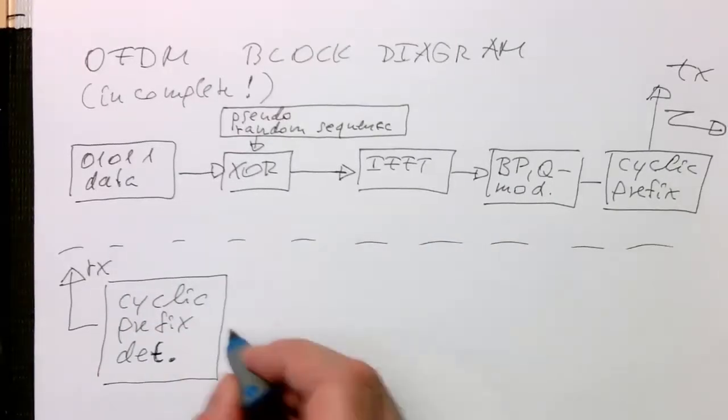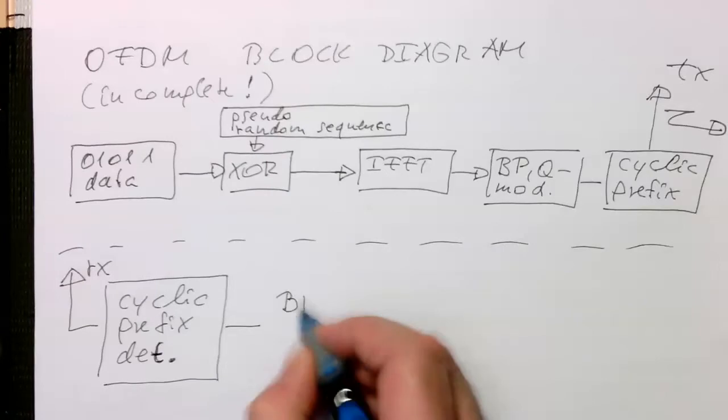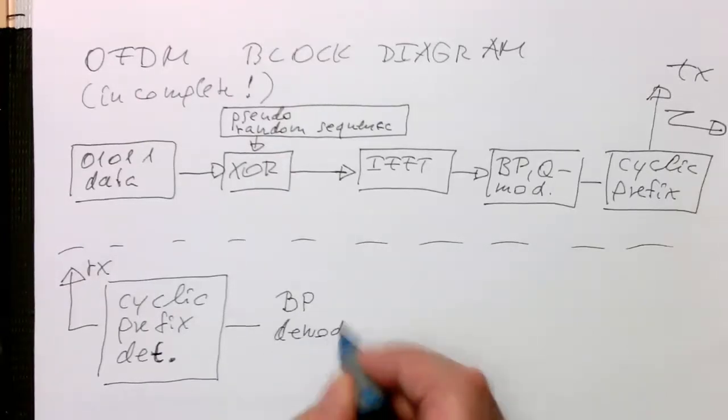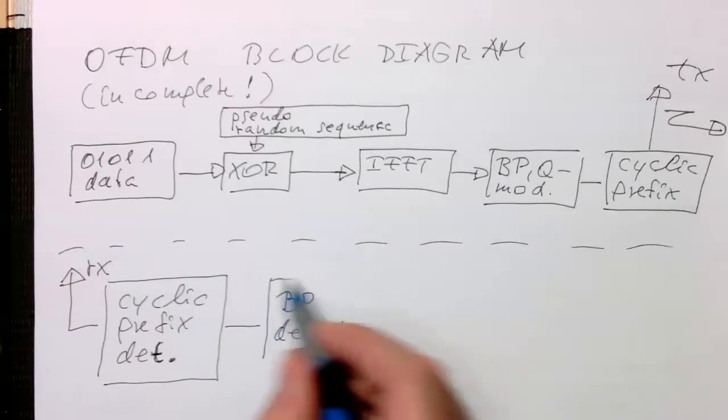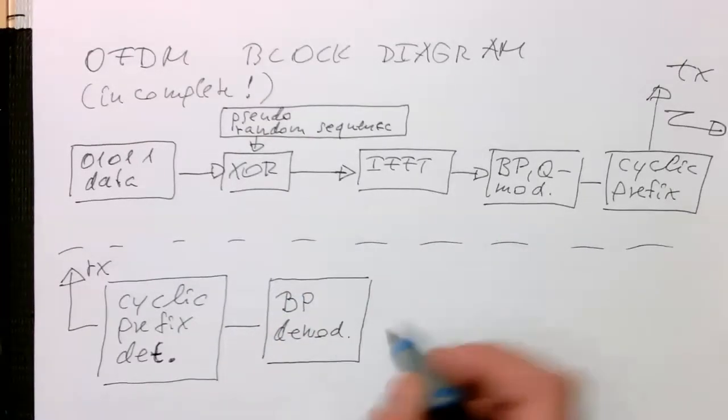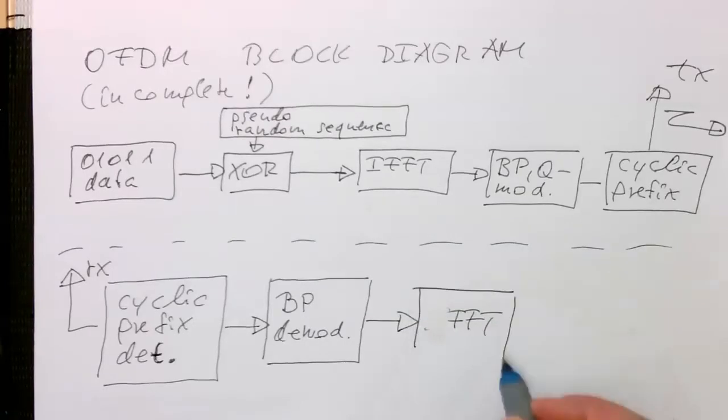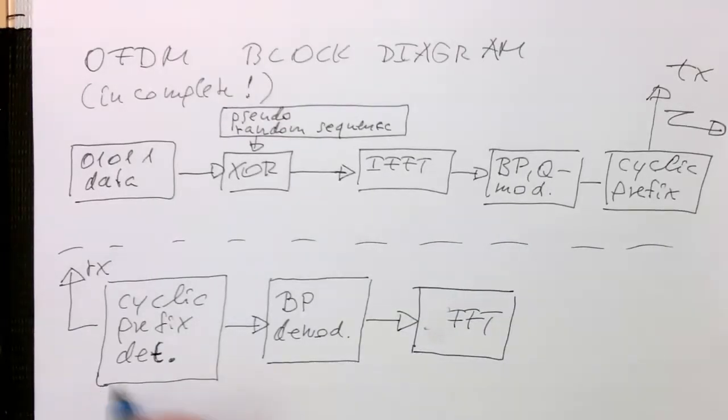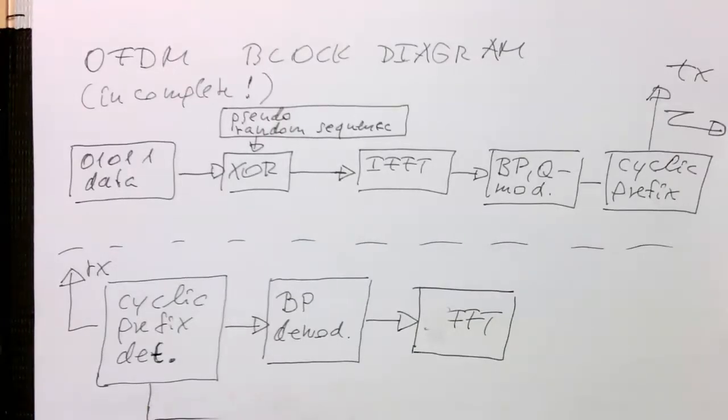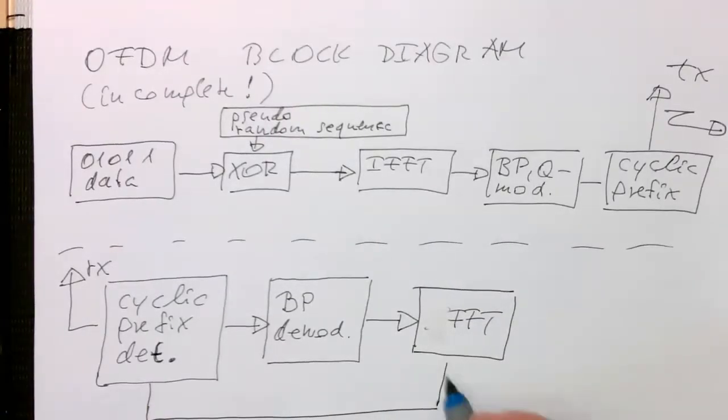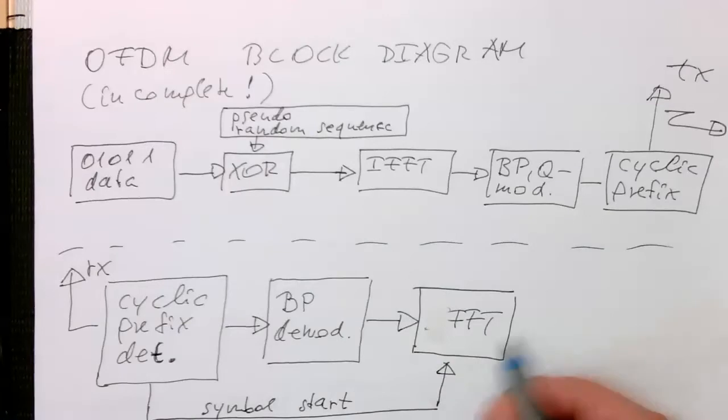So then we've got our bandpass demodulator, the bandpass demodulator just creates our complex signal. And then with that here we can do our Fourier transform. As we know, the Fourier transform needs to know exactly the start of the symbol. That's transmitted here via the detector, so that's the symbol start. Essentially gives us a sample number where the symbol starts and tells the IFFT to do the inverse from that sample.